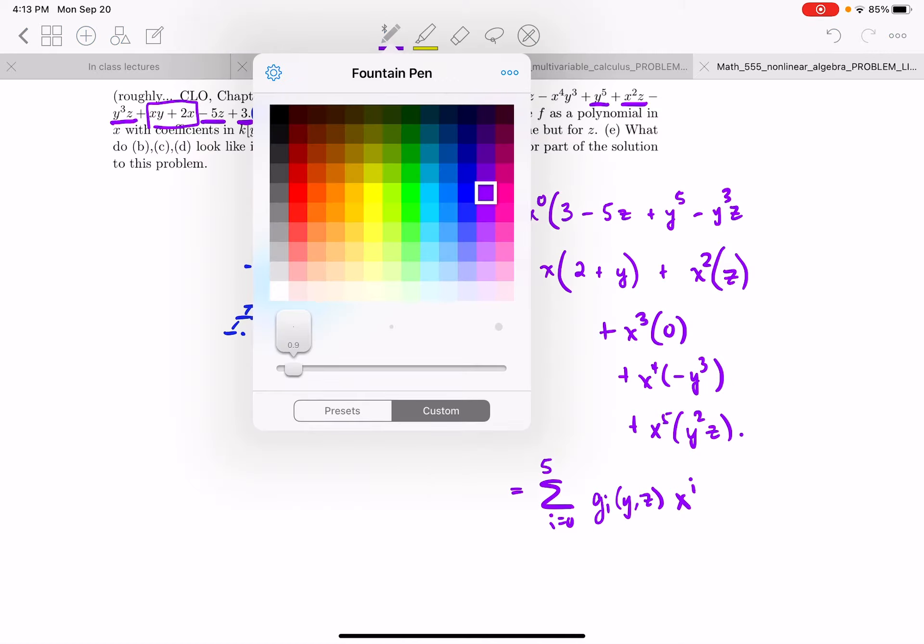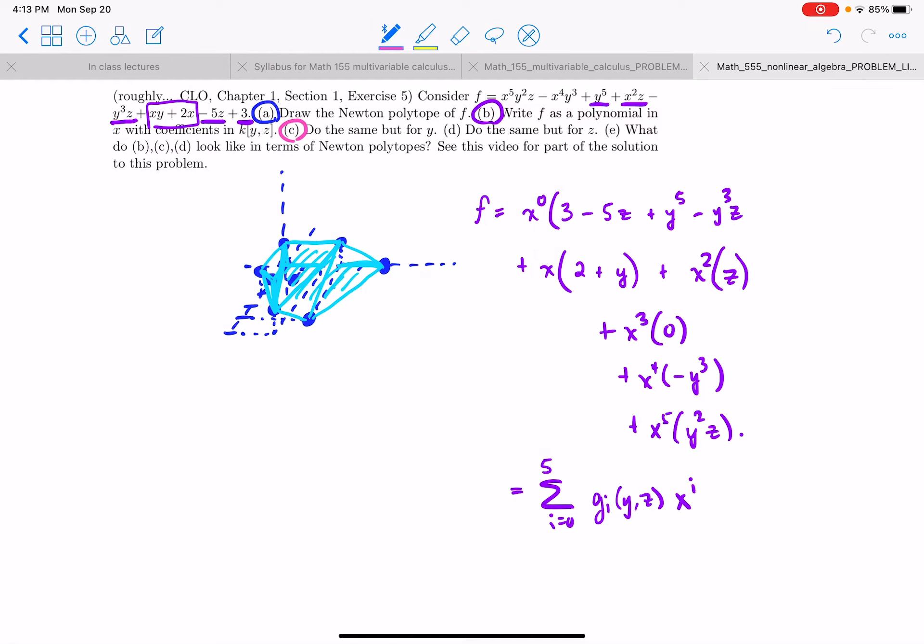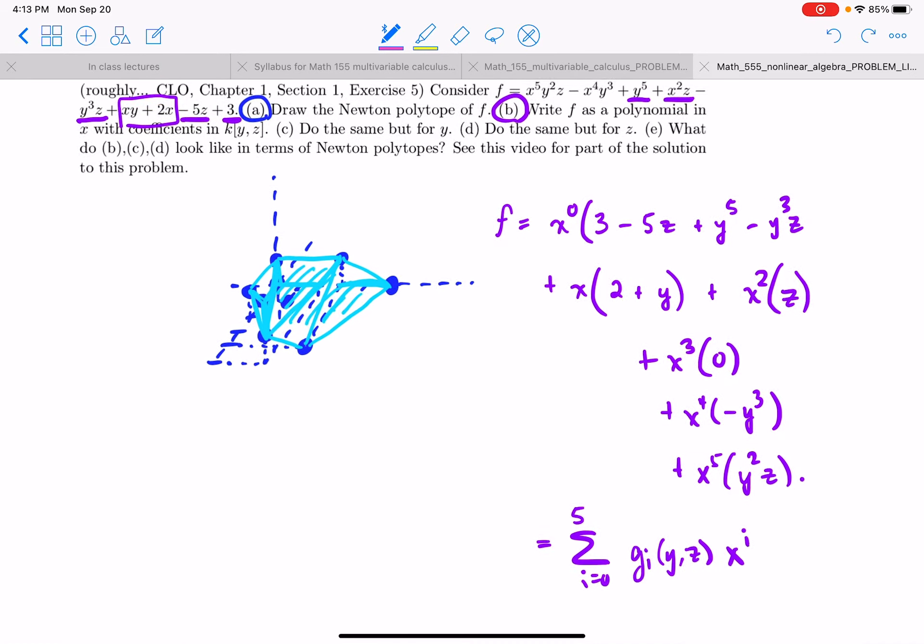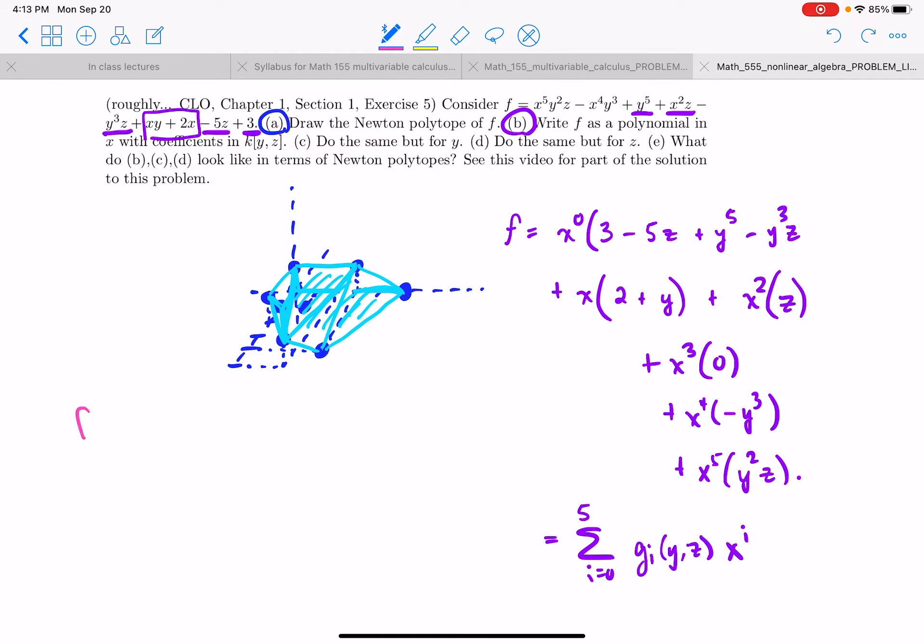Okay. Next one. Do the same but for y. Okay. So now we can do the same thing except now we'll collect in terms of y. So f is also equal to some h_i polynomials in the variables x and z times y to the i for i equals 0 up to the highest degree of y that occurs which I think is 5 also.